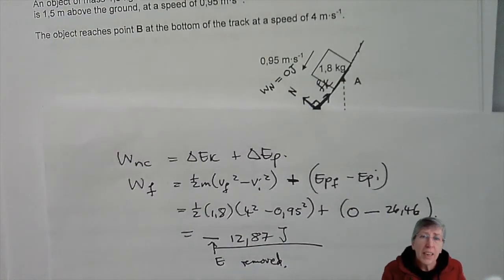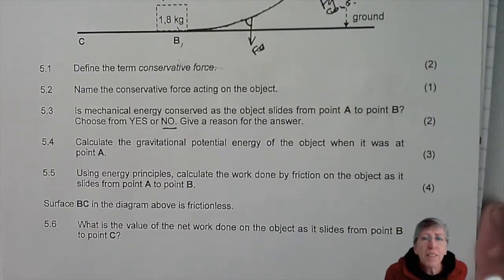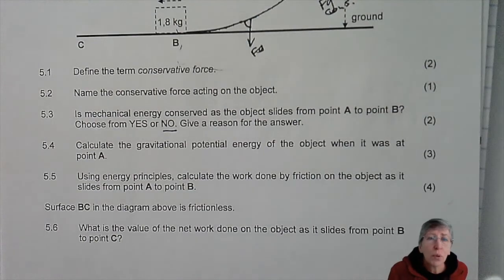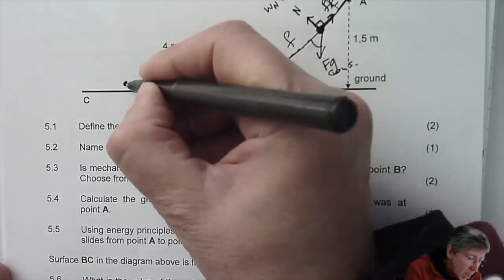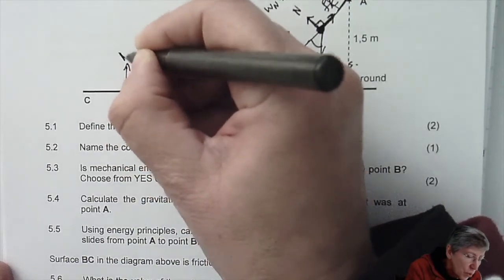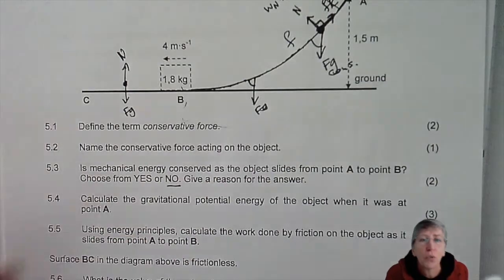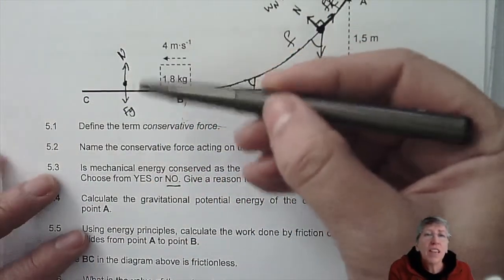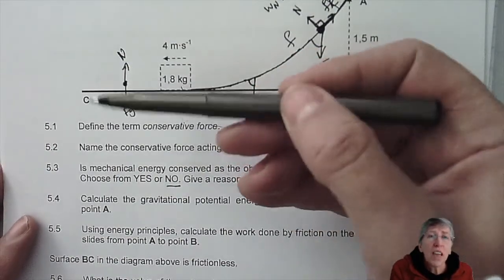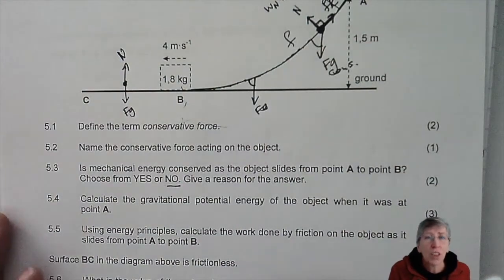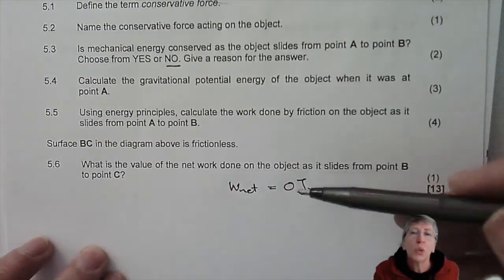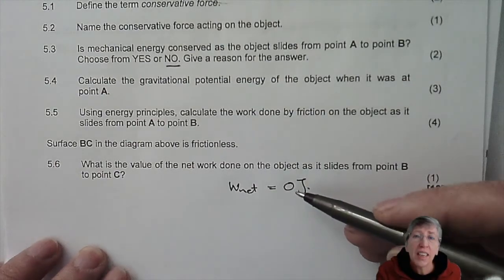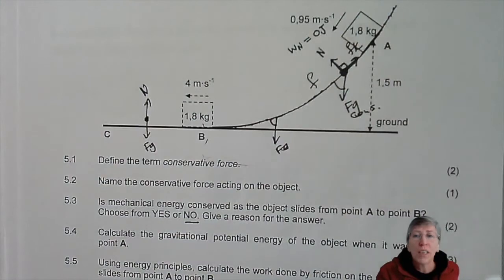What is the net work done on the object as it slides from B to C, where there is no friction? The forces acting are normal force and gravitational force — both perpendicular to the movement. So both have 90° angles and neither does work. The net work done is zero joules, meaning kinetic energy does not change, and the object continues at 4 m/s.